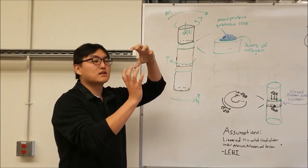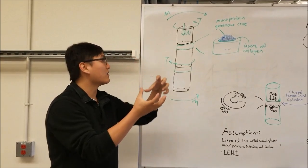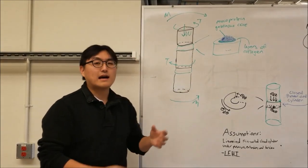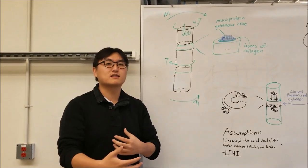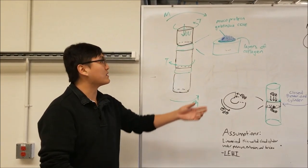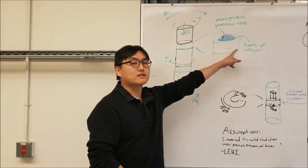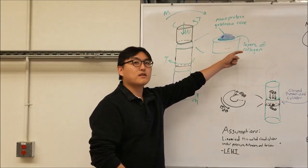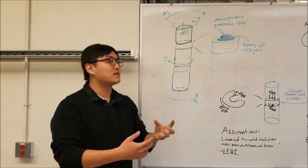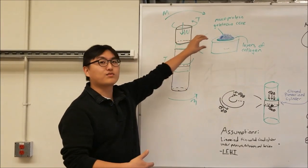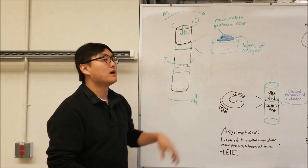Thousands of people in the United States every year are affected by issues with their discs, such as herniated discs in which the collagen layers are ruptured and the core leaks out, or slip discs in which the disc slips out from between the vertebrae.